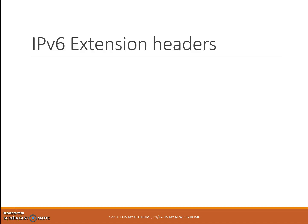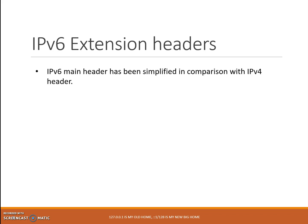IPv6 extension headers. As we saw in IPv6 protocol, the main header has been simplified in comparison with the IPv4 header. Its size is constant to 40 bytes only.